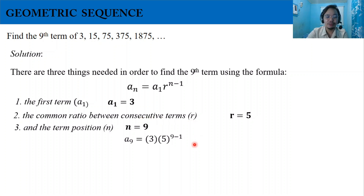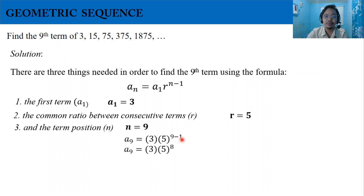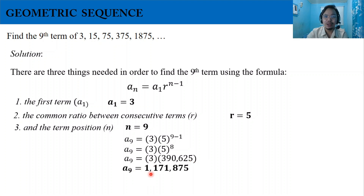By substitution, a sub 9 equals 3 times 5 raised to 9 minus 1, which simplifies to 3 times 5 raised to 8. Since 5 raised to 8 equals 390,625, multiplying by 3 gives us the ninth term: 1,171,875.